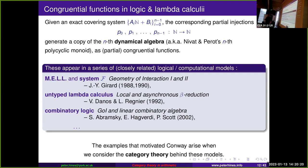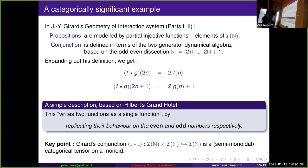The convenient starting point is of course Girard's geometry of interaction system. Let's look at how Girard models the multiplicative conjunction of linear logic. In his system, propositions are modeled by partial bijective functions, and conjunction is defined in terms of the two-generator dynamical algebra. He explicitly bases this on the odd-even split of the natural numbers.